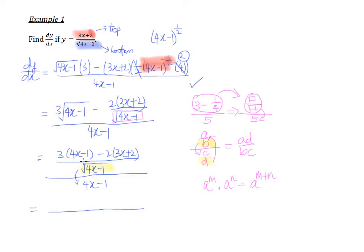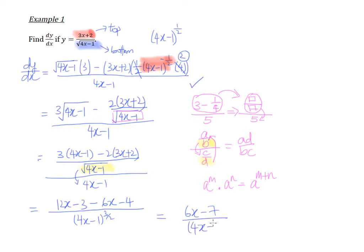This is power half and the other is power 1. According to the law of indices, A^M multiplied by A^N gives A^(M+N). So power half plus power 1 gives us power 1 and a half, which is 3 over 2. What's left at the top is 12x minus 3 minus 6x minus 4, and simplifying yields the answer of 6x minus 7 over 4x minus 1 to the power of 3 over 2. So this is our answer using the quotient rule.